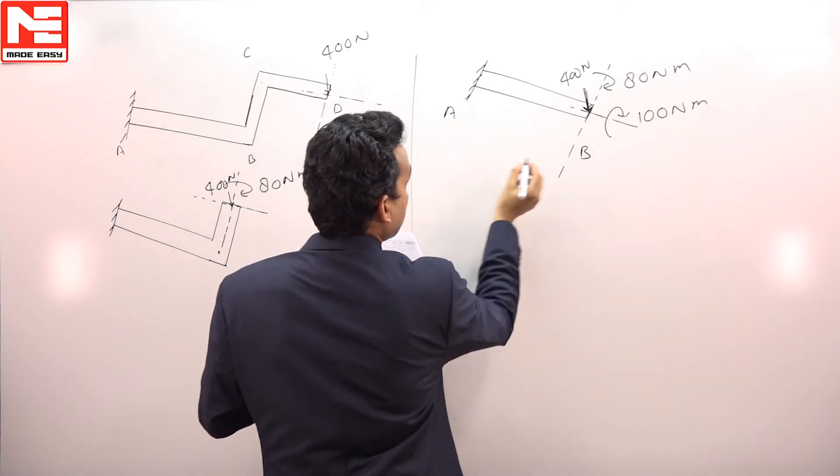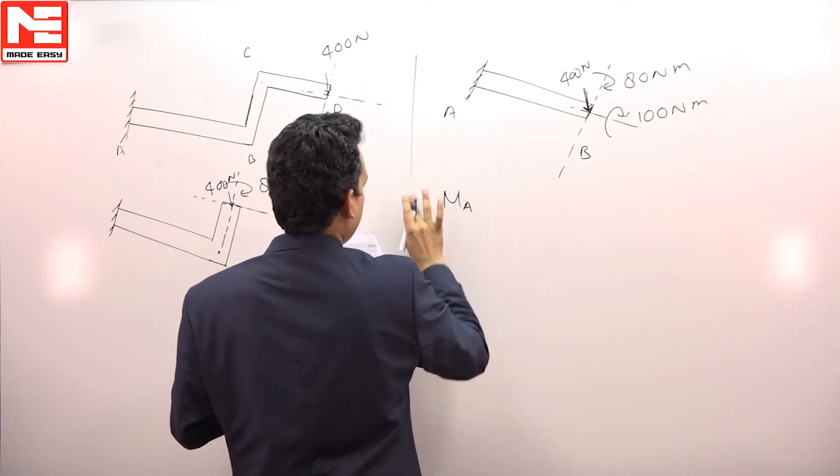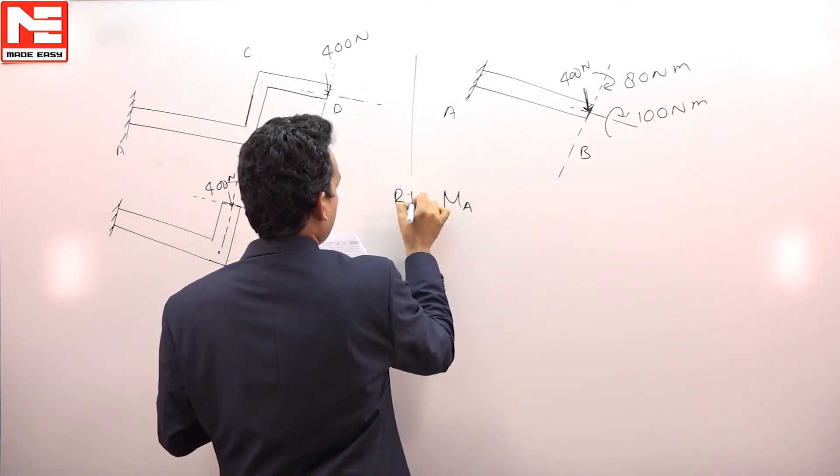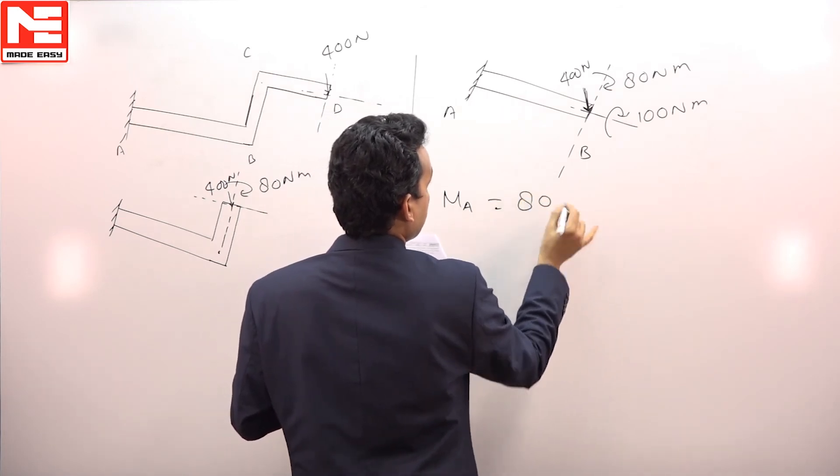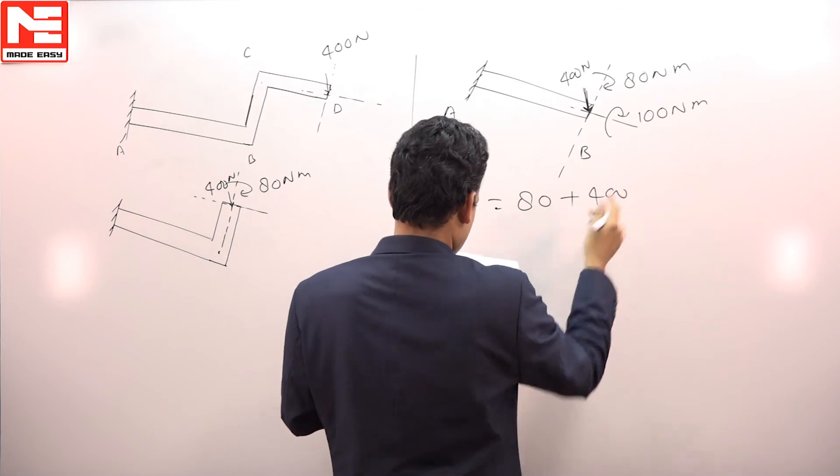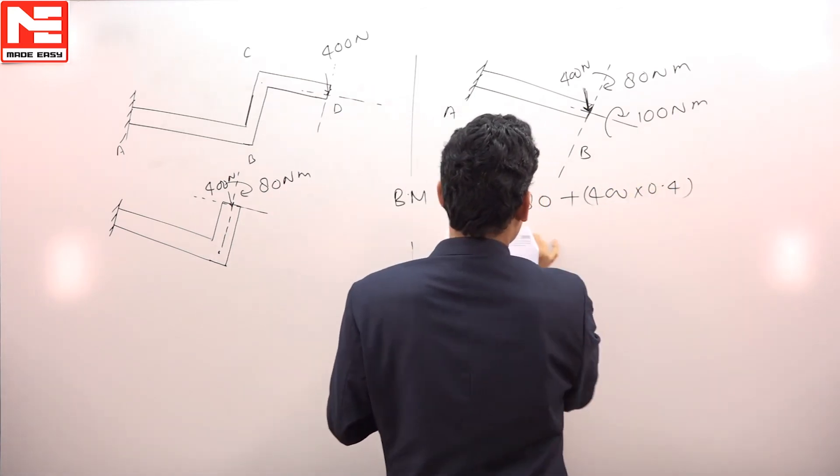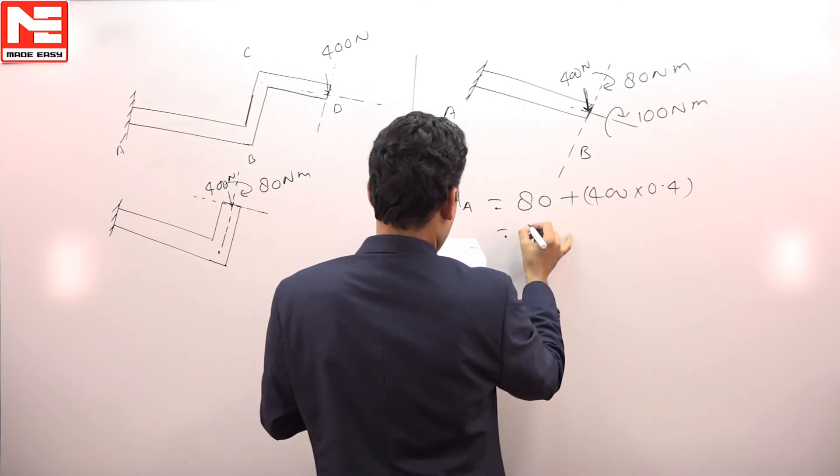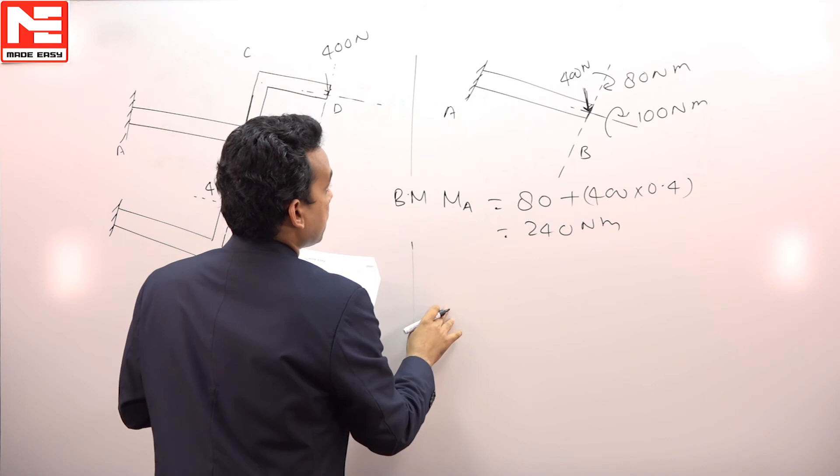If you find bending moment at A, that is MA, you will get 80 plus 400 into length 0.4. This would be equal to 240 Newton meter.